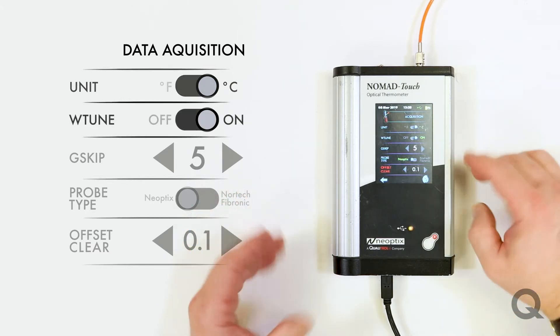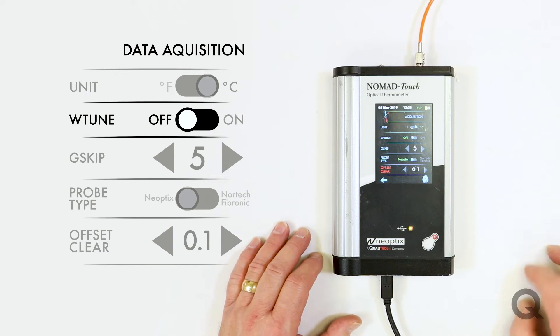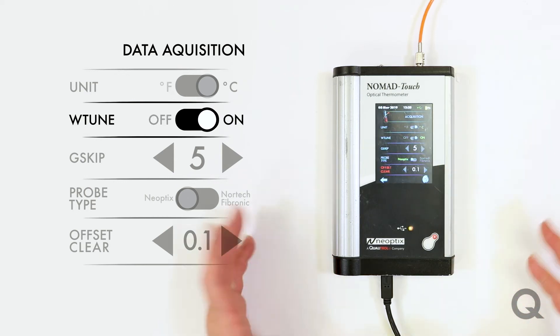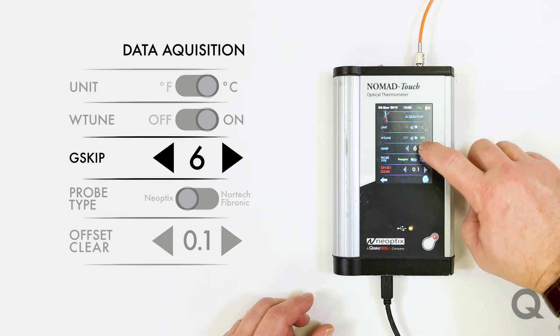There's a feature called W-Tune, which can adjust for different types of probes or inefficiencies in the probes. So, you can use a large range of probes without having issues. Your G-Skip will allow you to skip events as you're going.